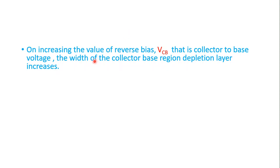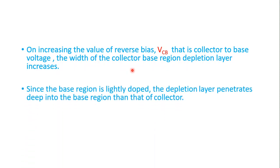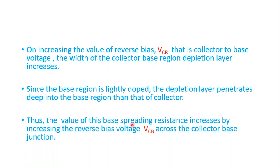On increasing the value of reverse bias VCB, that is collector-to-base voltage, the width of the collector-base region depletion layer increases. Since the base region is lightly doped, the depletion layer penetrates deeper into the base region than into the collector at the collector-base junction. Thus, the value of base spreading resistance increases by increasing the reverse bias voltage across the collector-base junction, with the increase of the depletion layer.